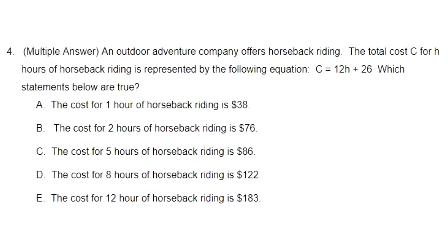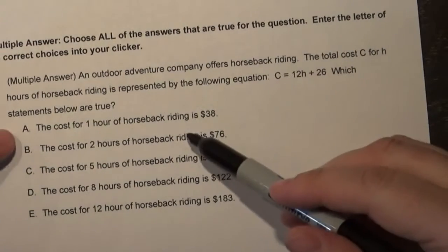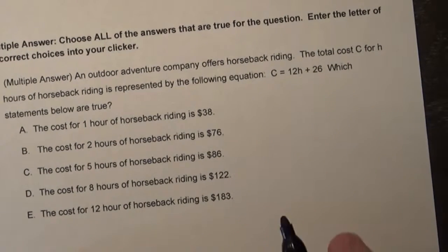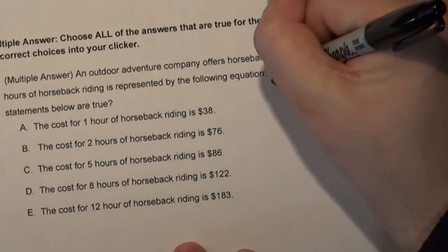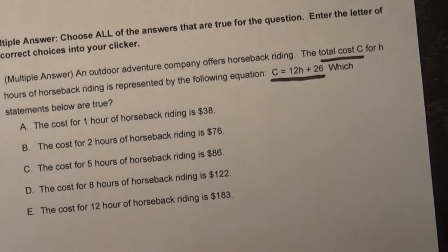Let's move on now to number four. Number four says an outdoor adventure company offers horseback riding. The total cost C for H hours of horseback riding is represented by the following equation: C equals 12H plus 26. Which statements below are true? We want to make sure we totally understand what's going on here. We know C is the cost and we know H is going to be the hours.